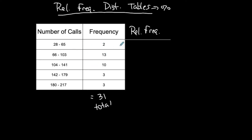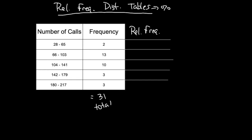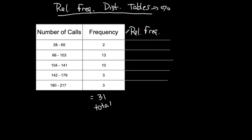If I'm creating a relative frequency table from a frequency table, I'm not changing the classes — I'm changing the frequency column into a relative frequency column. For the first relative frequency, I need to know what percent of the total the frequency of 2 represents.